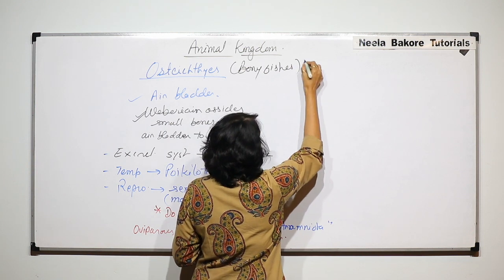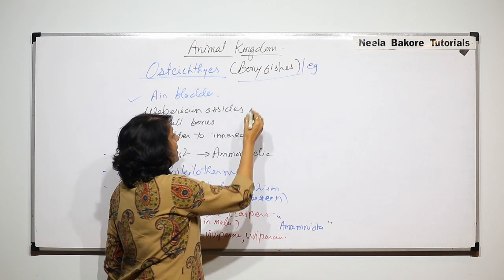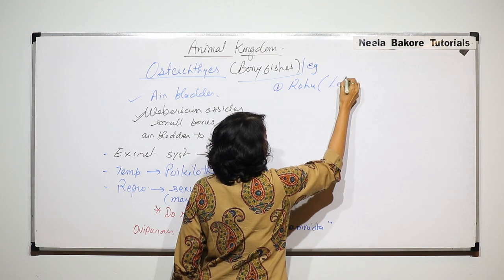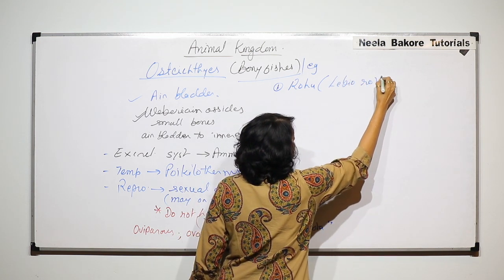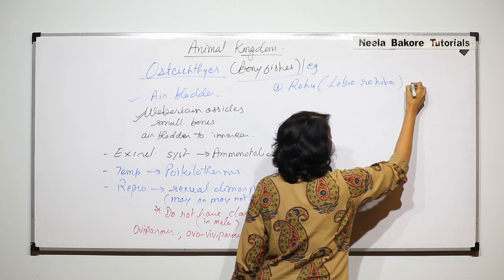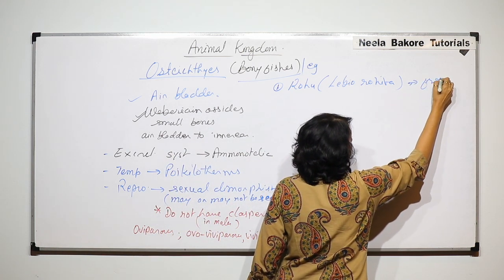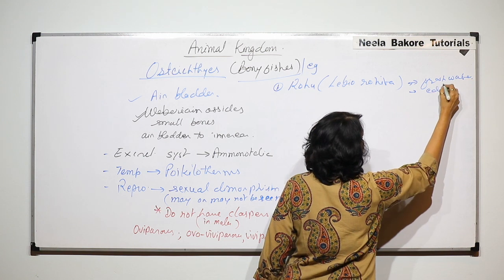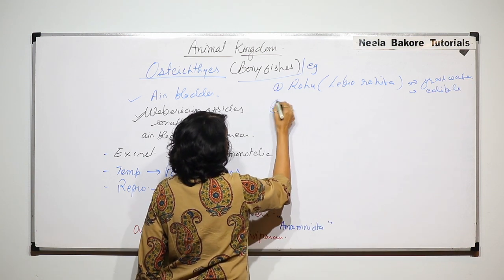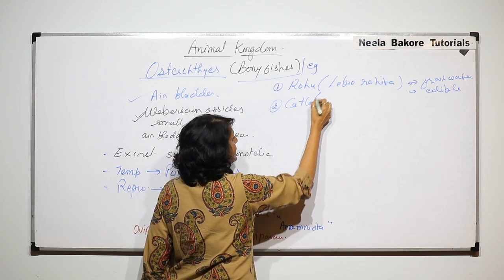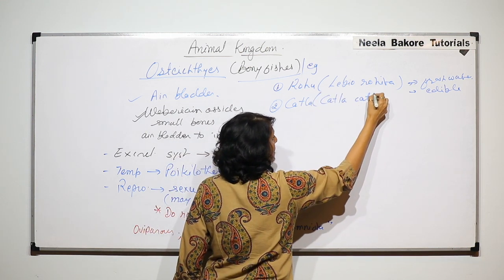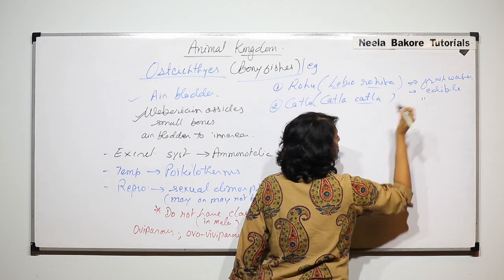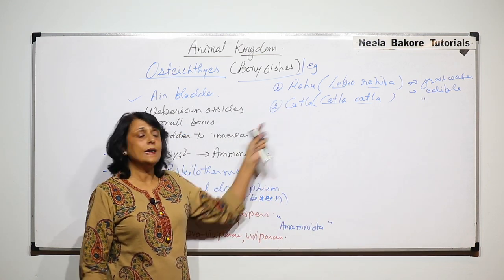Now let us take some important examples of bony fishes. The first is Rohu, whose scientific name is Labeo rohita. It is a freshwater and edible fish. The second one is Katla, with the scientific name Catla catla. This is also a freshwater and edible fish, and the characteristic features of Rohu and Katla are the same.